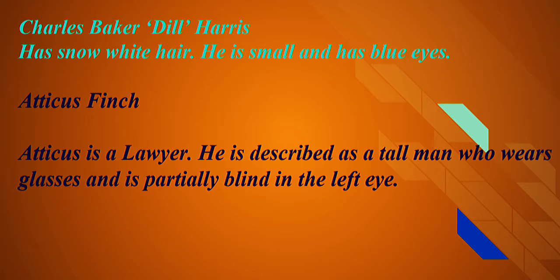Jem's closest friend is Charles Baker Harris, otherwise known as Dill. Dill is described as a small boy who has blue eyes and snow-white hair. He has an active imagination and is quite confident and curious. We know that his aunt is Miss Rachel. We know that Dill makes up a lot of lies — he specifically lied about seeing his father after returning from Meridian at the end of the school term.